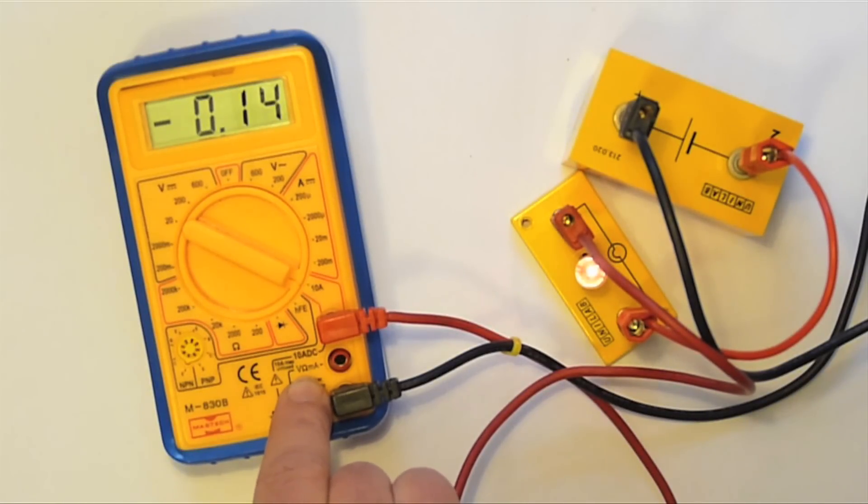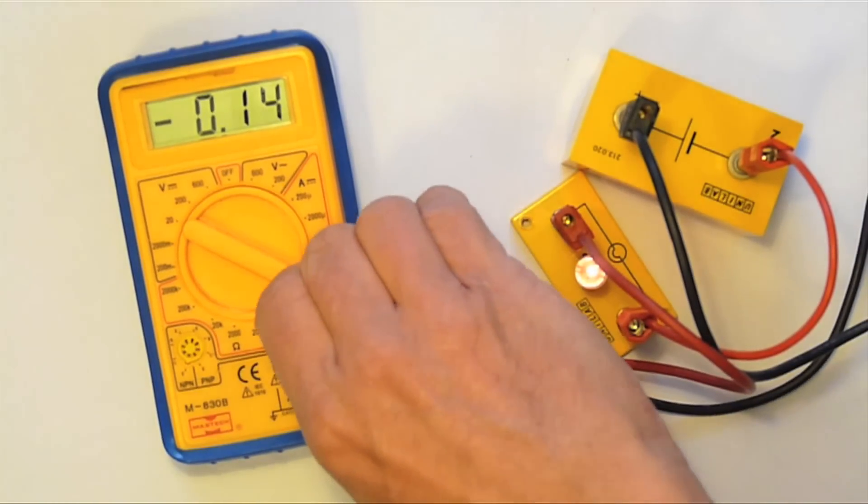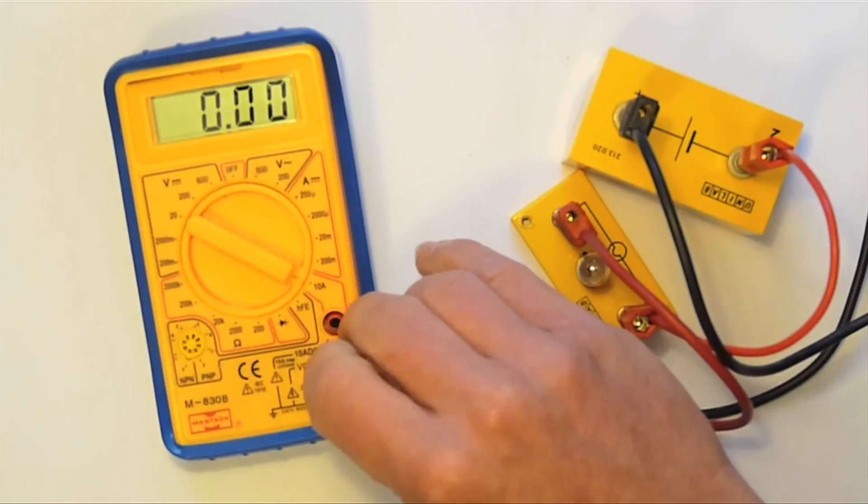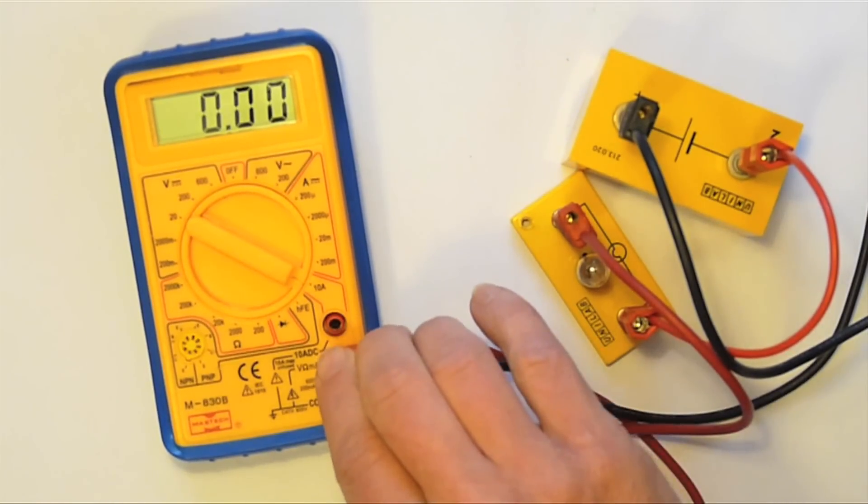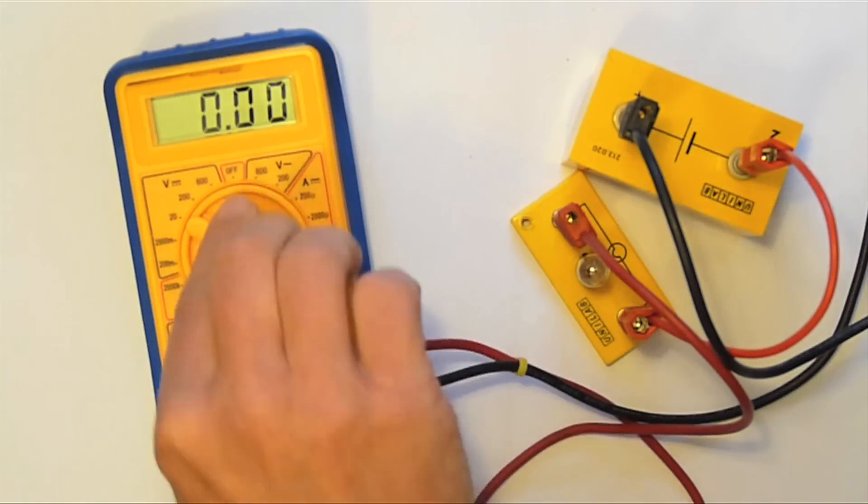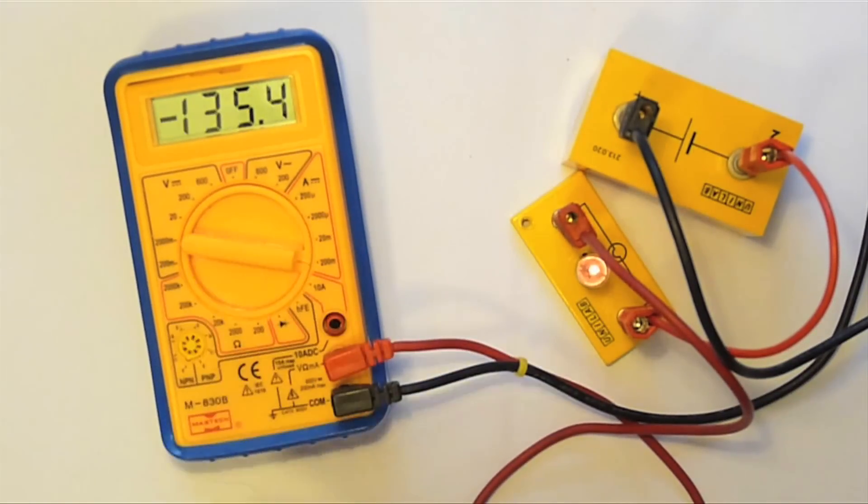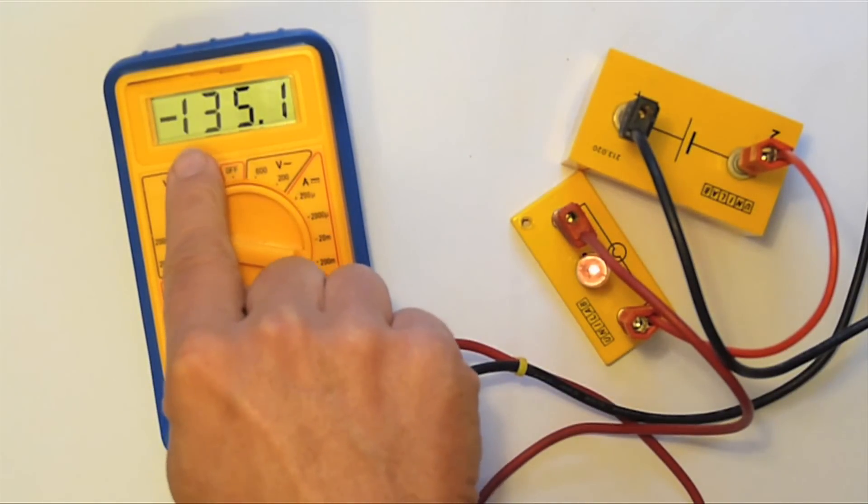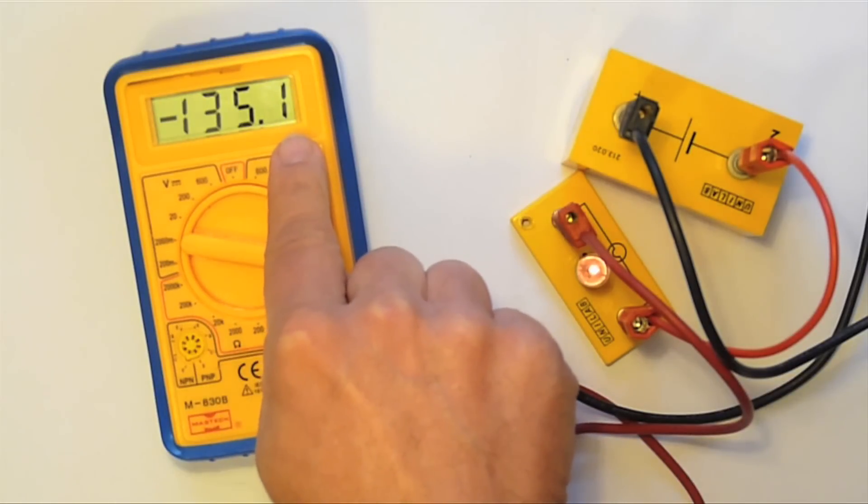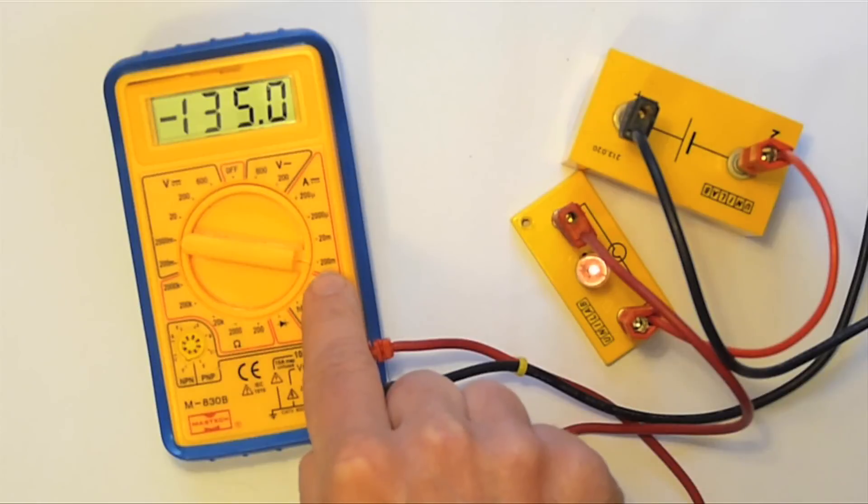Which is connected by a fuse which will blow if the current exceeds 200 milliamps. Let's measure the current again. 135.2 milliamps. This is on the 200 milliamp full-scale deflection range.